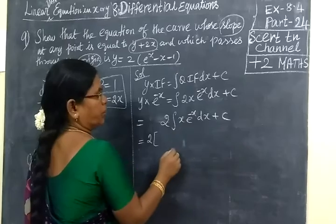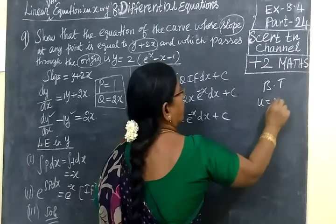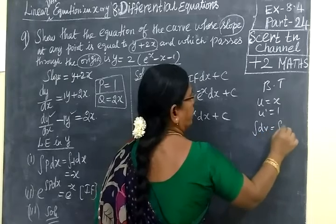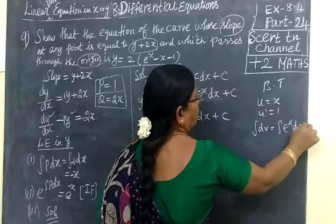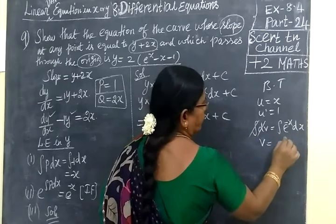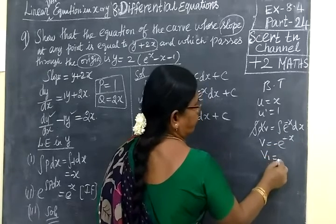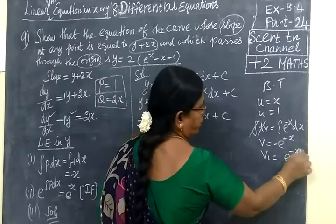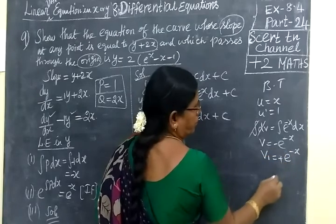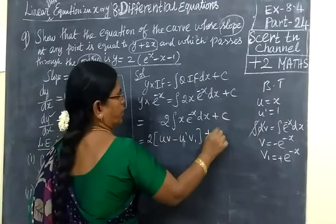So we use the Bernoulli method. Let u equal to x, therefore du equal to 1 dx. Then integral dv where v equal to integral e power -x dx, so v equal to e power -x divided by -1, which equals minus e power -x. Then v1 equal to plus e power -x. Now we substitute: u·v minus u'·v1 plus...